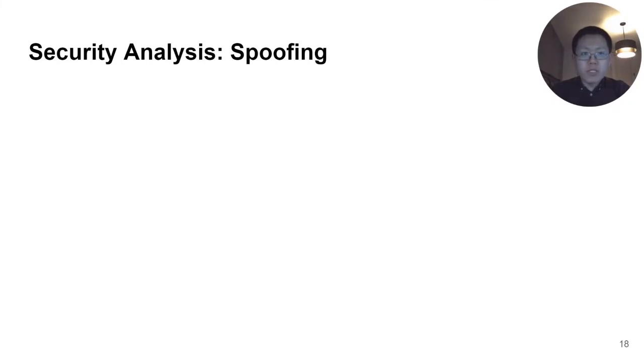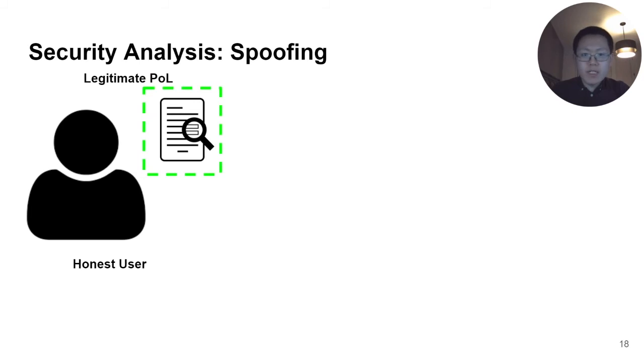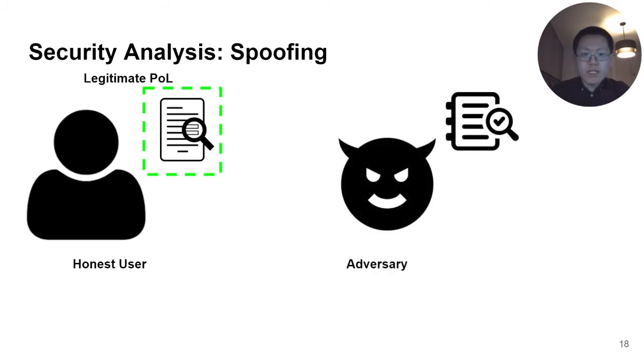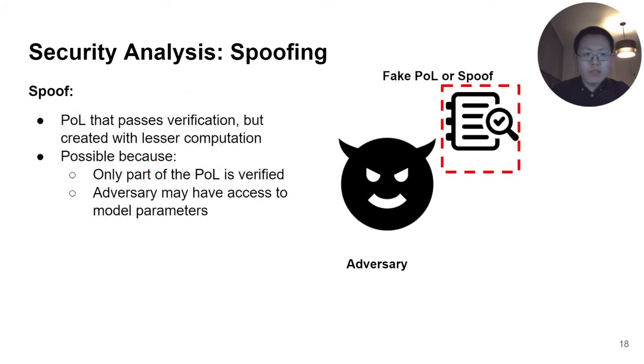We will talk about what the adversary may do in response to the proposed mechanism. The prover has a legitimate proof that could pass a verification. The threat is that an adversary wants to pass a verification by creating a proof that requires less computational power than training the model. We call this as spoofing. It is possible because only part of the proof is verified, and the adversary may have access to some stolen model parameters. This is more information than when the prover started to train the model. The spoofing could be either honest or dishonest. In the honest case, the adversary tries to create a fully valid proof, where every single step could pass a verification. However, such methods usually lead to computational costs that are equally or even more expensive than training the model, which goes against the adversary's goal.